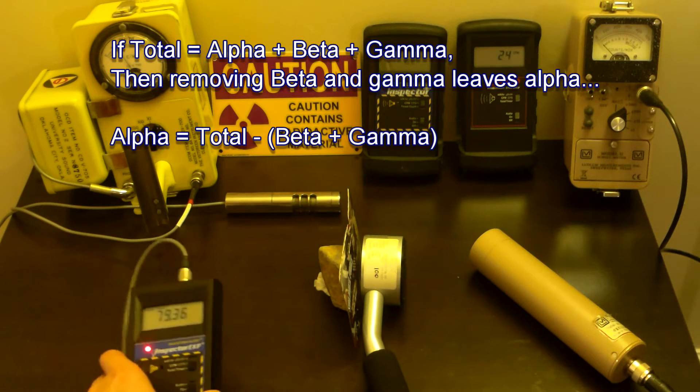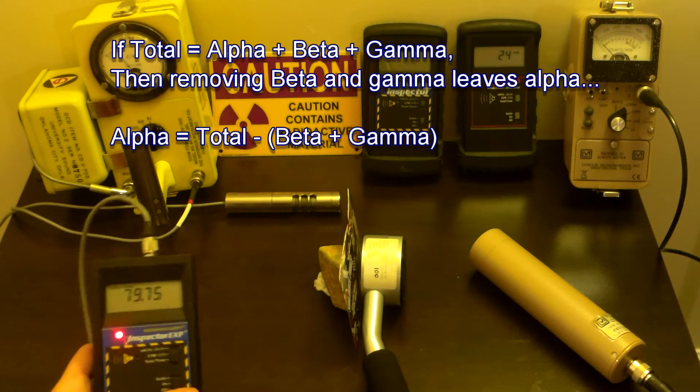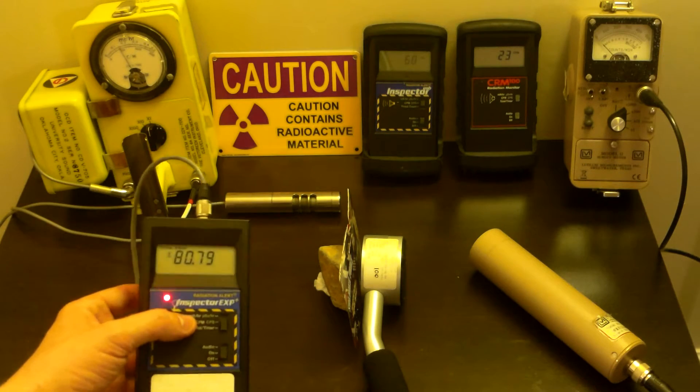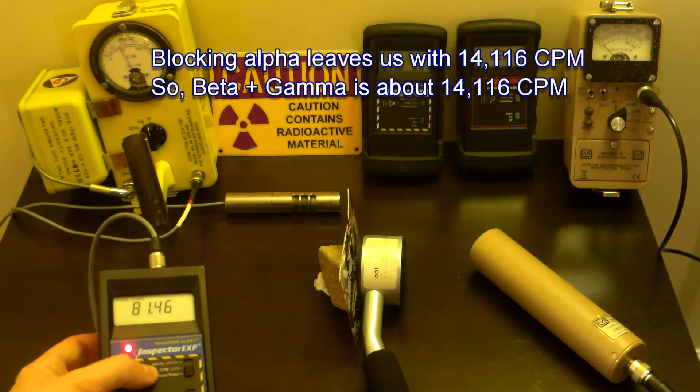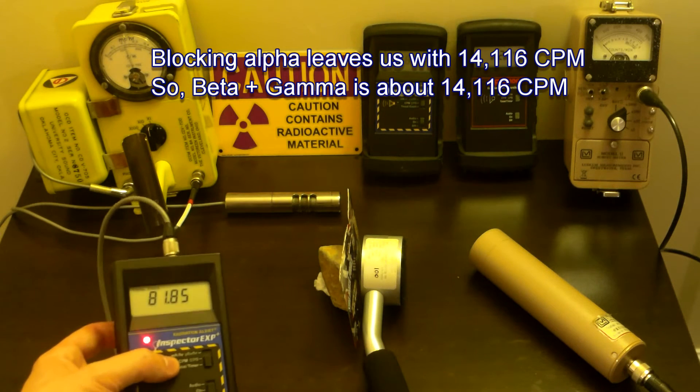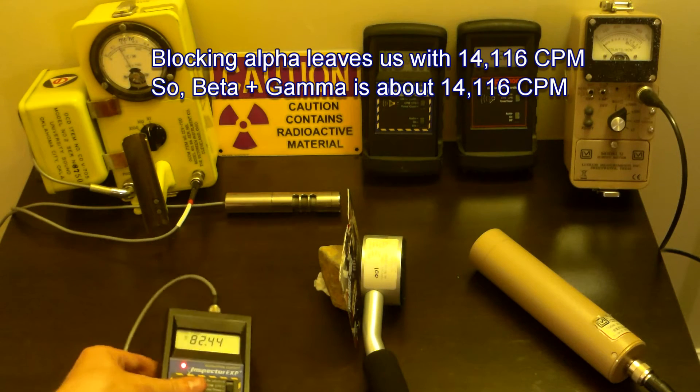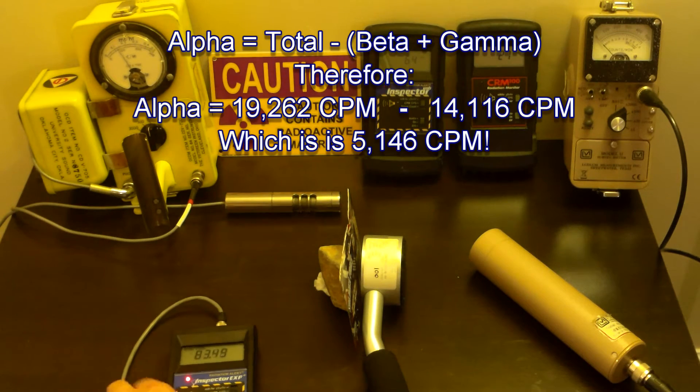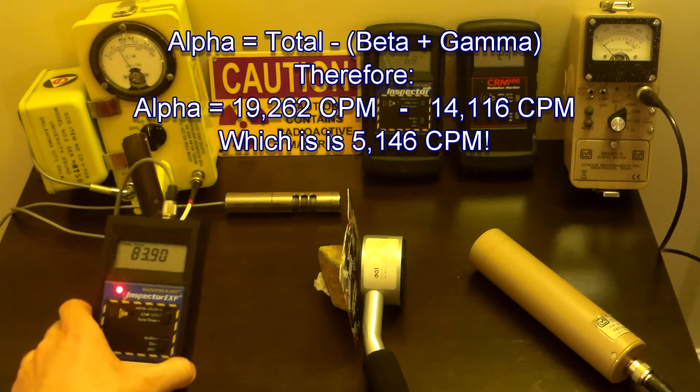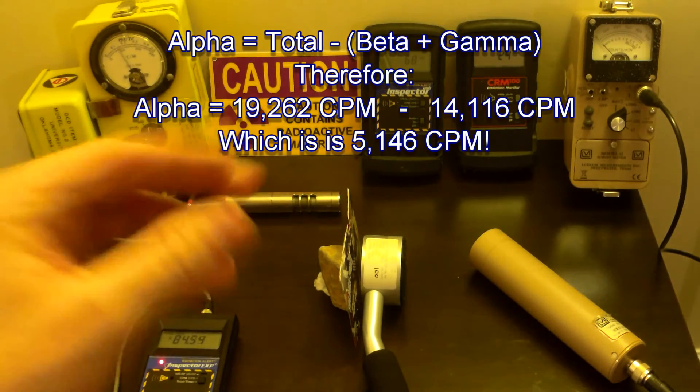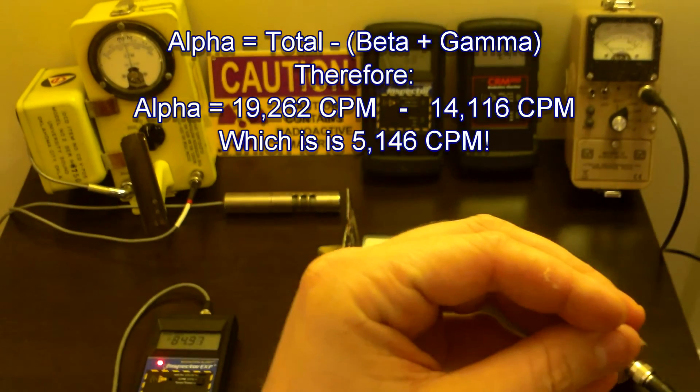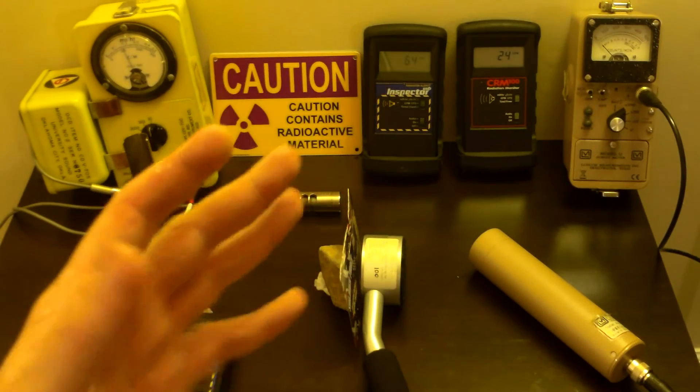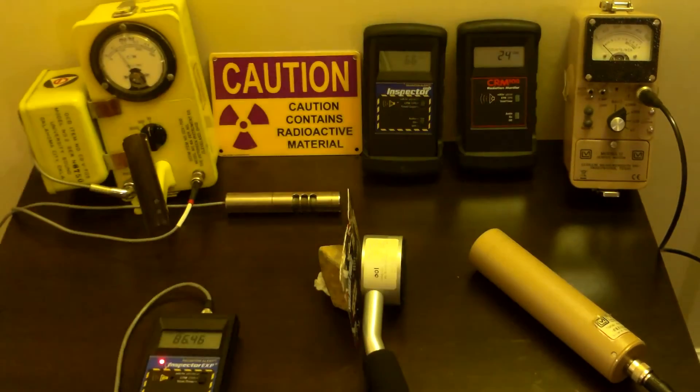So, we do this and we come out to, after five minutes of testing, we come out to about 14,116 counts. We subtract that from the 19,262 that we originally got for the total, and so we can deduce that alpha is about 5,146 counts per minute. I'm going to show you the math of this in just a minute. So, we know what alpha is and we know what the total is. Now, if we could figure out what gamma was or if we could figure out what beta was, if we could figure out those two, then we'd be good to go, right? Because then we would have two of the three variables, we'd be good to go.